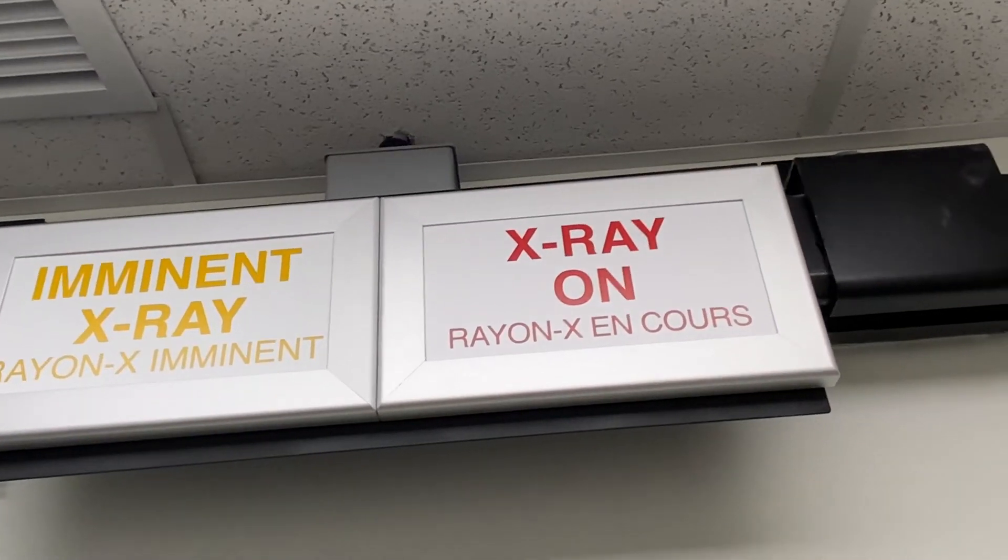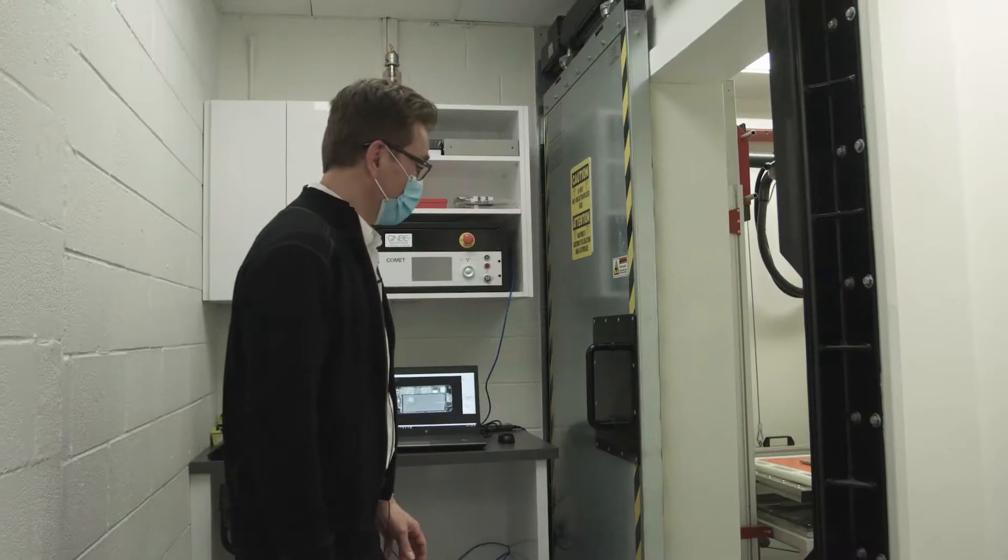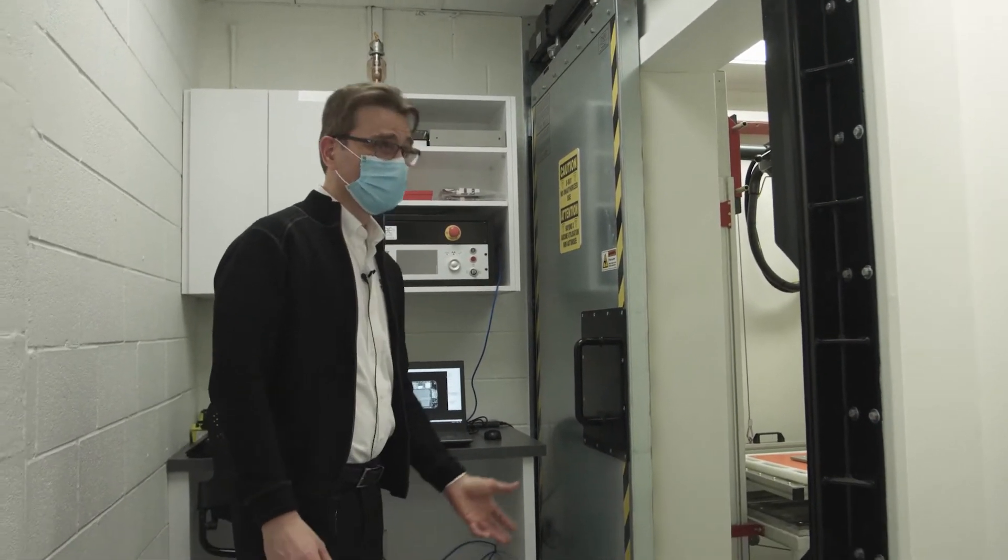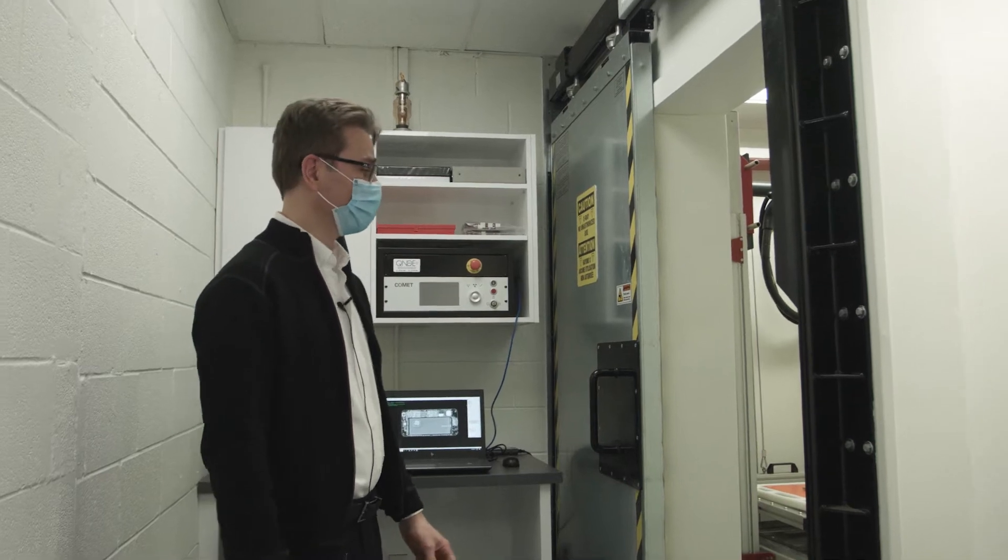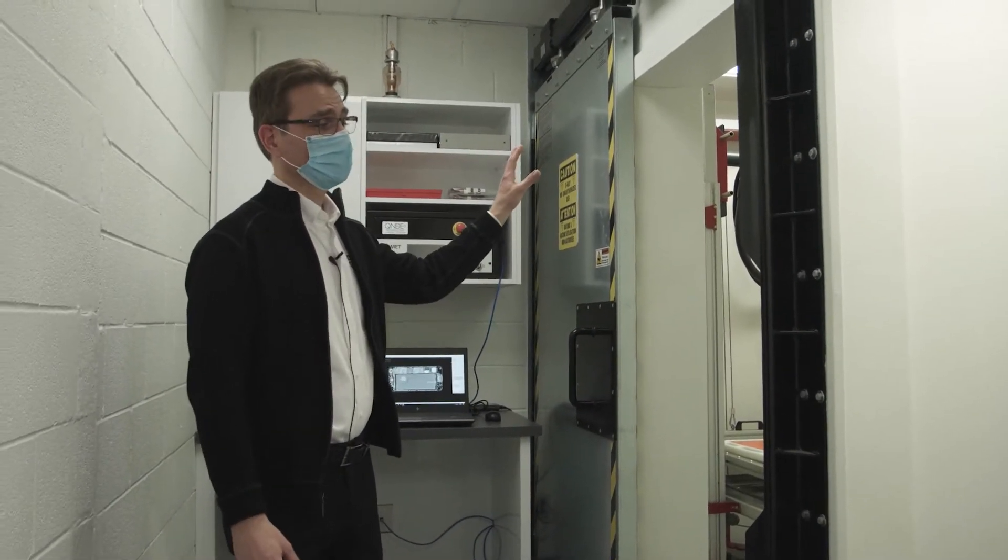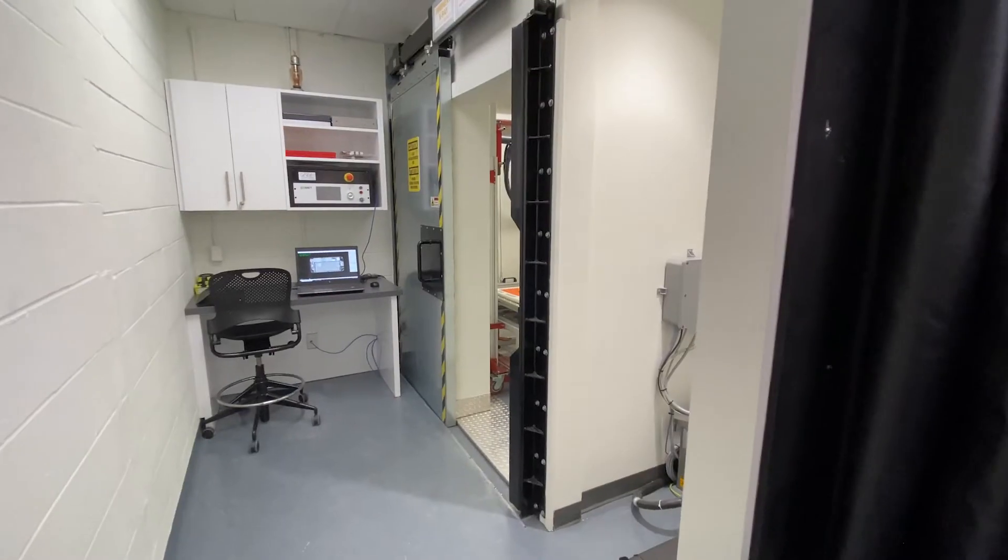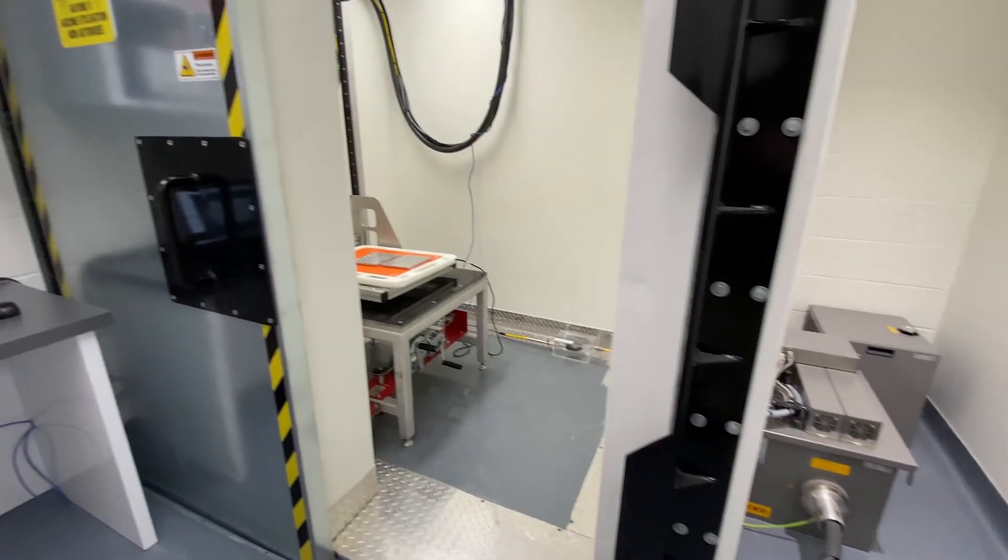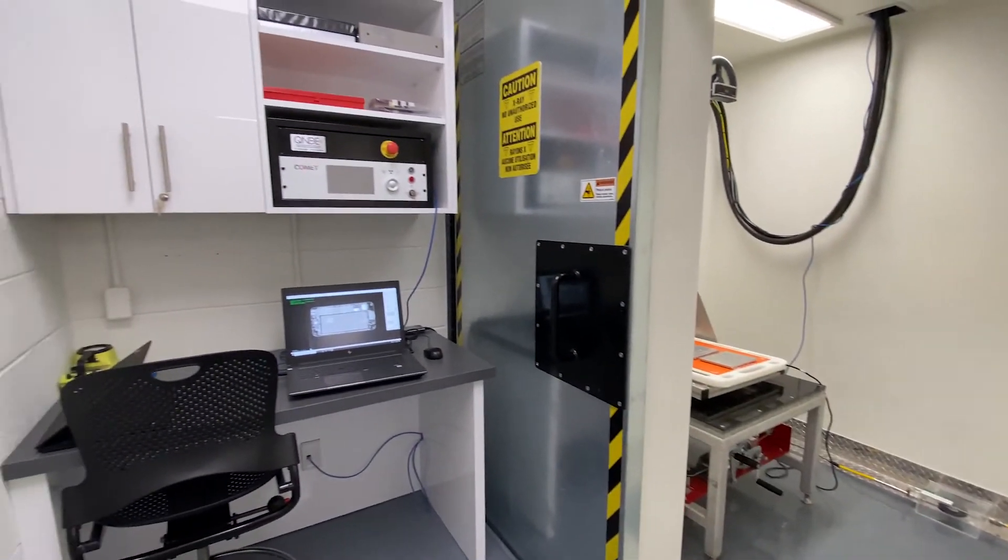And the vast majority of that is radiography. So we're looking at this is actually a Comet constant potential 220 kilovolt peak x-ray tube, with its generator and a cooling system. And so this enables us to run this pretty well as often as we want to.